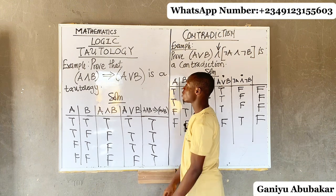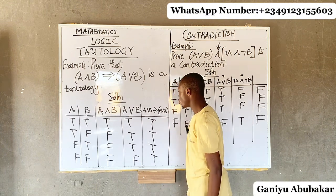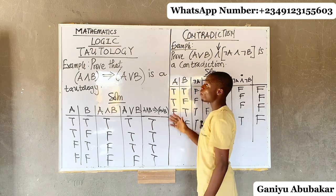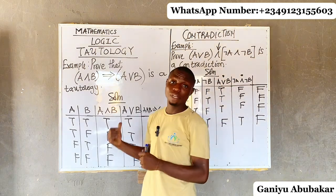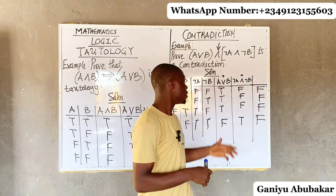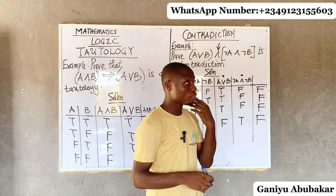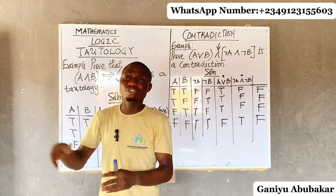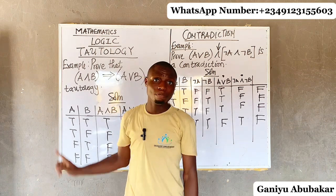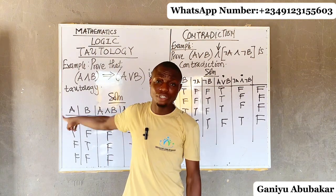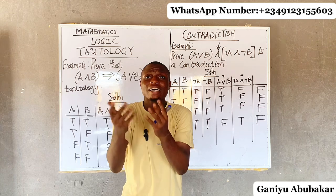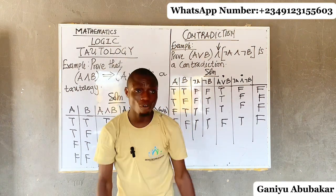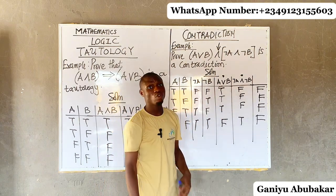This is called tautology when the final answers are all true. This is called contradiction when the final answers are all false. So if you solve a problem and all your answers are true, it's tautology. But if all your answers come down to false, false, false, false, it becomes a contradiction.